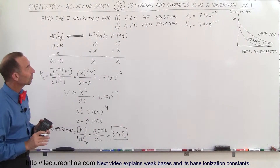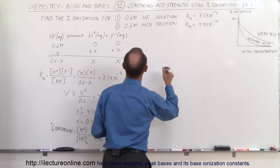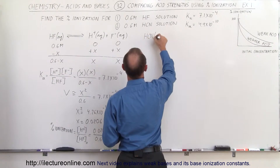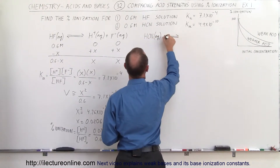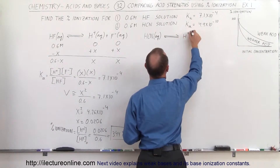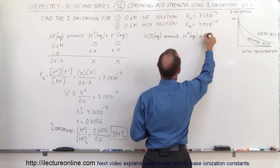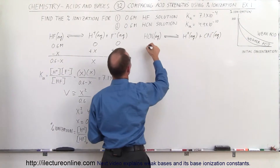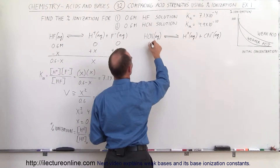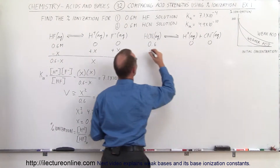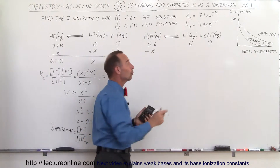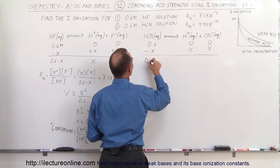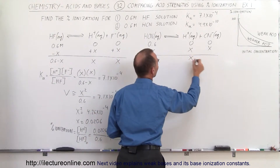Now let's do this again with the next acid — hydrocyanic acid, HCN. In aqueous solution, it will partially ionize to form the hydrogen ion and the conjugate base. We start with a concentration of 0.6, zero, and zero. The HCN decreases by X while the products increase by X. So the final concentrations are 0.6 minus X, X, and X.